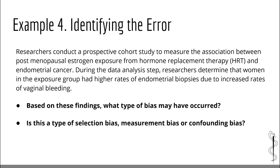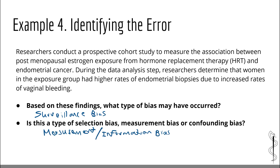Next example: Researchers conduct a prospective cohort study measuring the association between postmenopausal estrogen exposure from hormone replacement therapy (HRT) and endometrial cancer. During data analysis, researchers found that women in the exposure group had higher rates of endometrial biopsies due to increased rates of vaginal bleeding. The problem is that the outcome variable was assessed differently between groups — women taking HRT were screened more frequently. This is an example of surveillance bias, because the exposed group was screened more frequently than those who were not. To minimize this, women in both groups should have been screened an equal number of times.